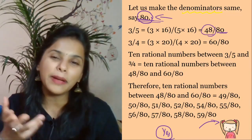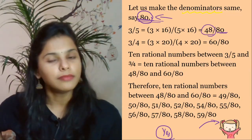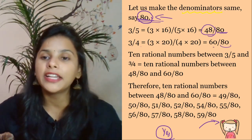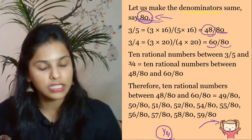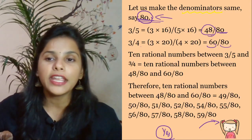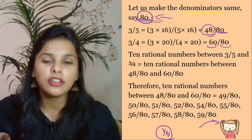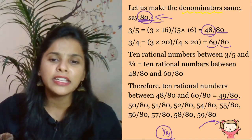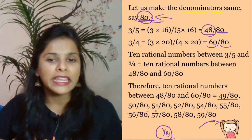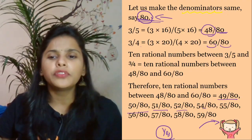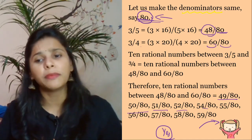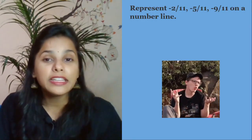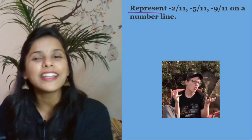I suggest you choose your own denominator. When you choose denominator 80, the numerator follows automatically: 3/5 becomes 48/80, and 3/4 becomes 60/80. Finding 10 rational numbers between 48 and 60 is straightforward: 49/80, 50/80, 51/80, 52/80, 54/80, 55/80, and so on up to 80.